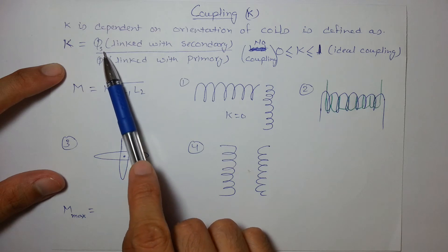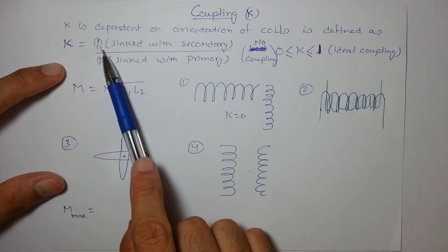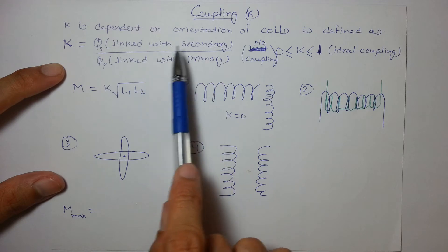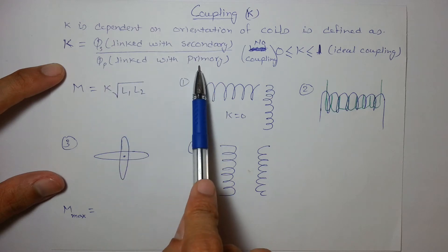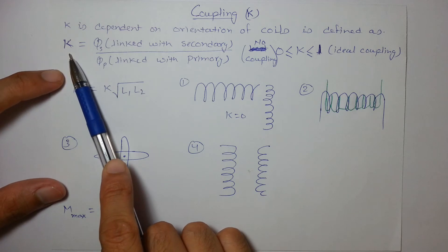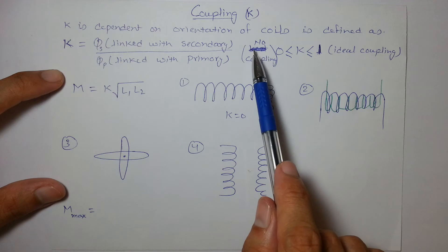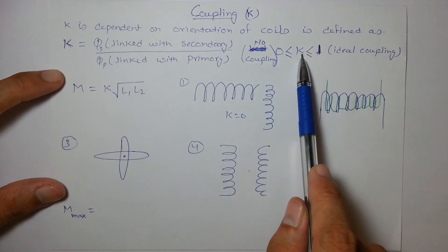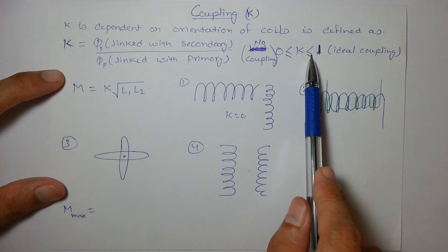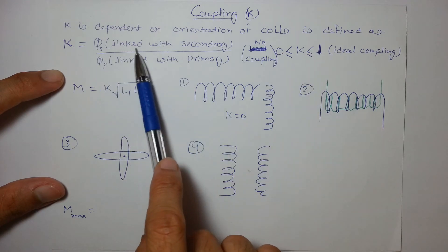Secondary is in which induction is to be considered or in which direct current is not flowing. So flux through secondary linked and flux through primary—if both are equal then we can say that coupling will be 1. Obviously the coefficient will lie between 0 and 1 because flux through secondary can never be greater than the flux through primary itself.